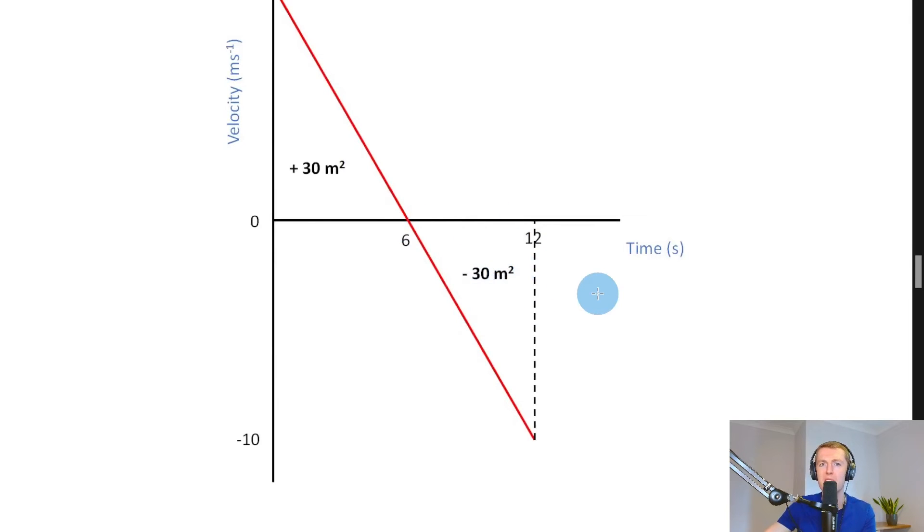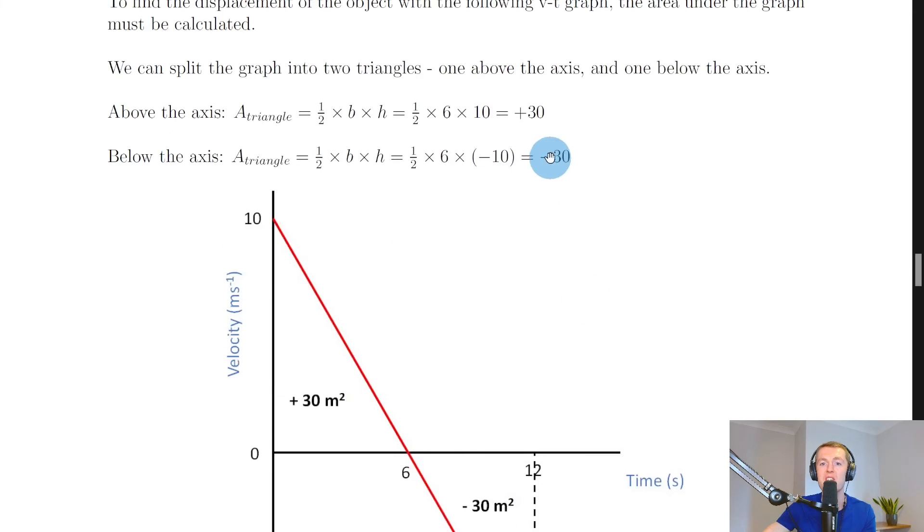For this triangle below the axis again we've got a half times base times height and we're going to add that to our first area. So we've got a half times base times height which gives us a half times 6 again because this is just an upside down triangle. There's my base I've got 6 to 12 gives me 6 and then my height is actually minus 10 this time so that gives me a half times 6 times minus 10 which will give me minus 30.